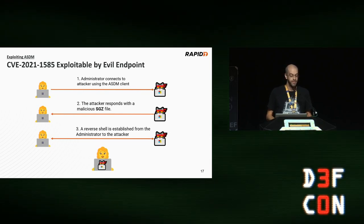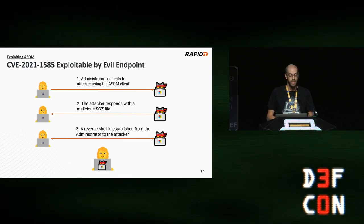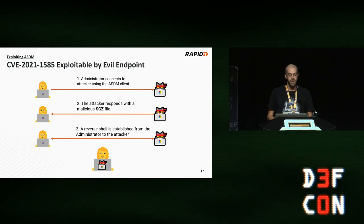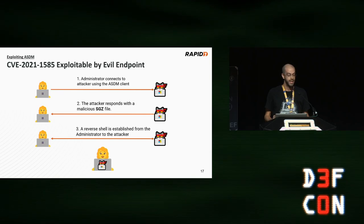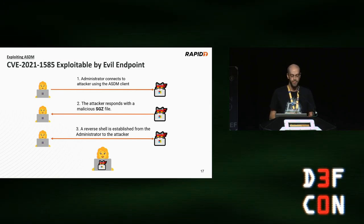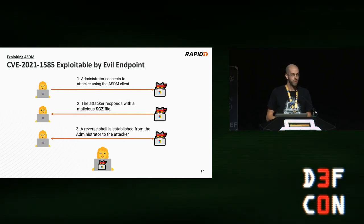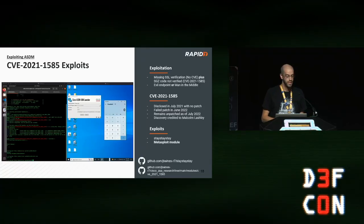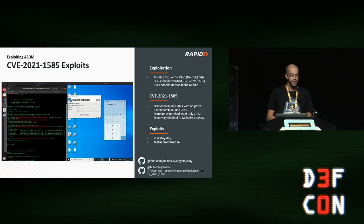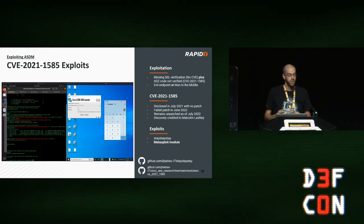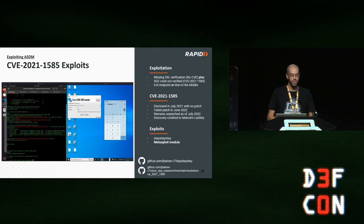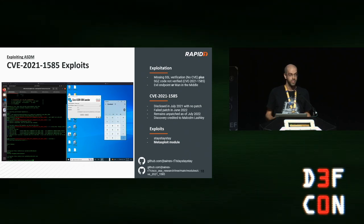A man-in-the-middle position is difficult for an attacker to achieve, but CVE-2021-1585 is also useful for evil endpoints. If an attacker can trick an administrator into connecting to an endpoint they control, the attacker can return an SGZ file with malicious content. The ASDM client will load that into memory, execute it, and the attacker gains code execution on the administrator system. This isn't theoretical — I've written two exploits for 1585, one of which is a Metasploit module. These are viable attacks that could be pulled off by low-skilled attackers and should be taken very seriously.